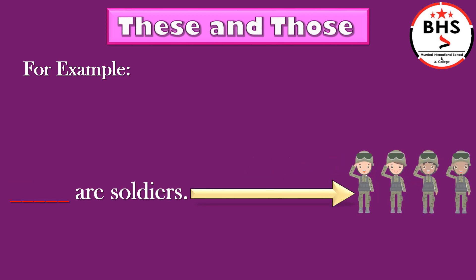Dash are soldiers. Children, here, there are more than one soldier and the long arrow shows they are far. Hence, we will use those. Those are soldiers.